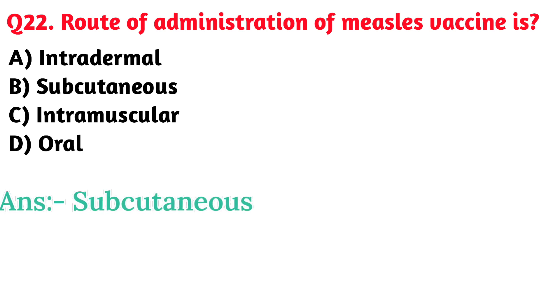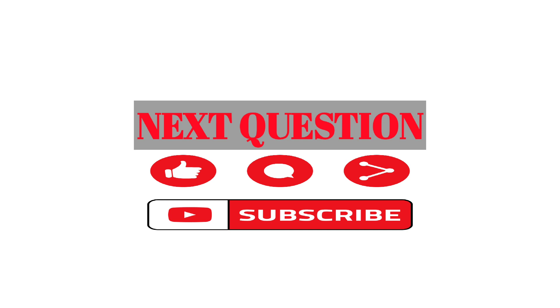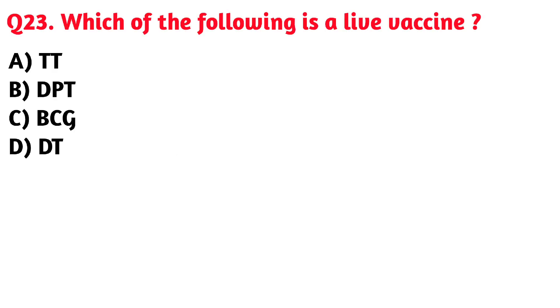Next question: Route of administration of measles vaccine is. Option B. Subcutaneous is the correct answer.